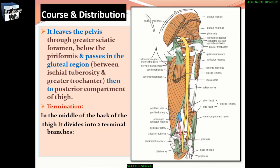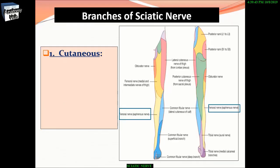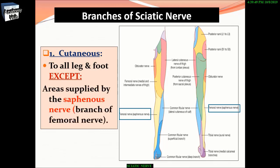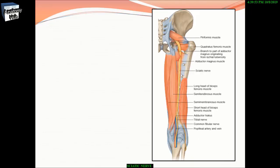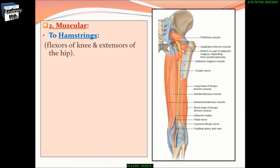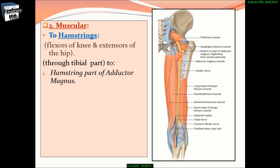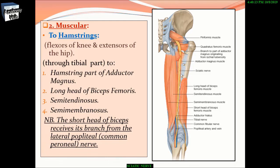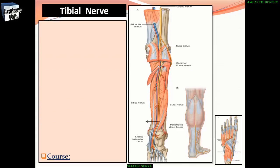It terminates in the middle of the back of the thigh, dividing into two terminal branches: tibial and common peroneal (fibular). Cutaneous distribution covers all of the leg and foot except the area supplied by the saphenous nerve (branch of the femoral nerve). Muscular supply includes the hamstrings — flexors of the knee and extensors of the hip — through the tibial part: the hamstring portion of adductor magnus, long head of biceps femoris, semitendinosus, and semimembranosus. The short head of biceps receives its branch from the common peroneal nerve.